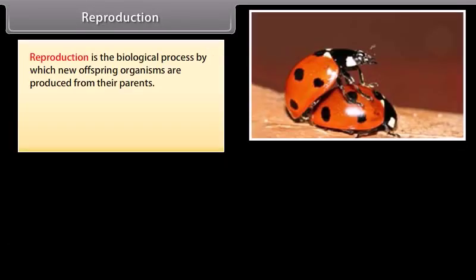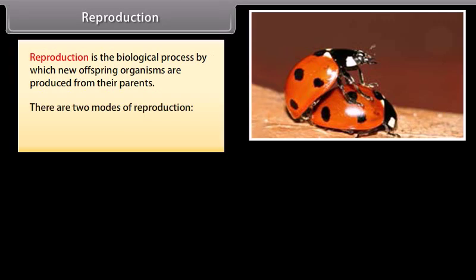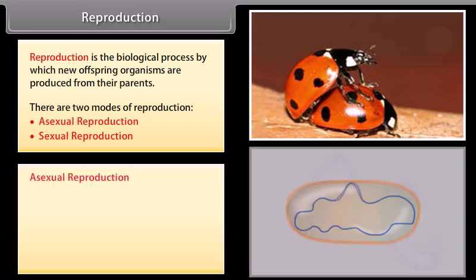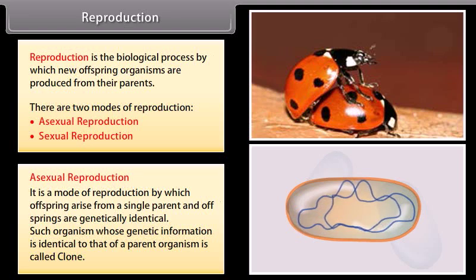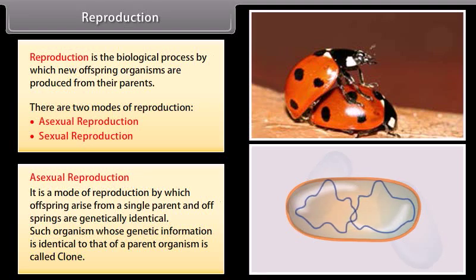Reproduction is the biological process by which new offspring organisms are produced from their parents. There are two modes of reproduction: asexual reproduction and sexual reproduction. Asexual reproduction is the mode of reproduction by which offspring arises from a single parent, and offsprings are genetically identical.